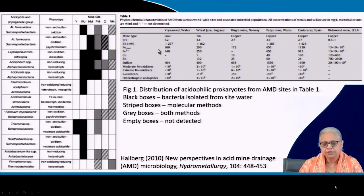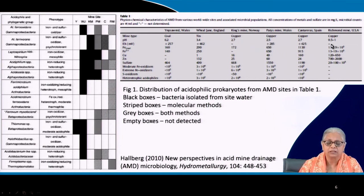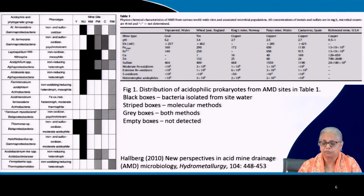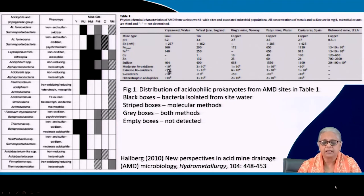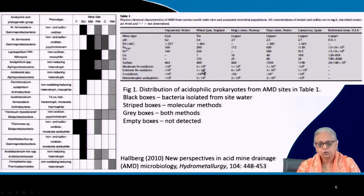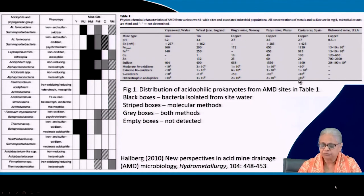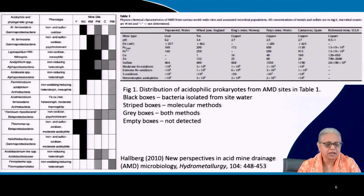Other than the first site, all sites have extremely low pH: 3.4, 2.7, 2.5, 2.7, and less than 1. There are both autotrophic and heterotrophic bacteria present. The concentrations are not very high — slightly less than 10² (near the detection limit for many methods), up to 10³, 10⁴, and 10⁵ in one case. These are some of the iron oxidizing bacteria identified in acid mine drainage.